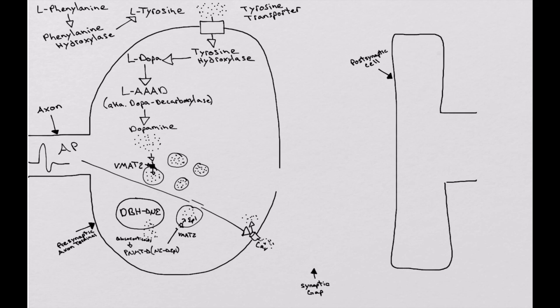That will induce the vesicle to move over and fuse to the presynaptic axon terminal, the plasma membrane. At that point in time, the vesicle will break open. It will release the contents, which in this case is epinephrine, into the synaptic gap.